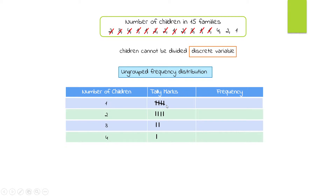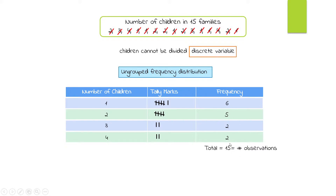We end up with 4, 2, and 1 additional tally marks in the last rows. Counting the lines: we have 6 lines in the first row, 5 in the second, 2 and 2 in the remaining rows. So the frequencies are 6, 5, 2, and 2. The total must add up to 15, which is the number of observations across 15 families.